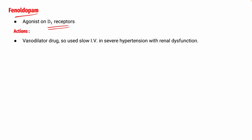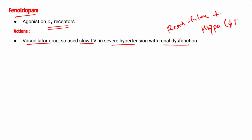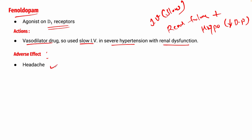The next drug is fenoldopam. It is an agonist on D1 receptors, so vasodilation is present — it is a vasodilator drug. It is used as a slow IV infusion in severe hypertension with renal dysfunction, when renal failure is associated with hypertension. Adverse effects include headache, tachycardia, palpitation, and hypotension.